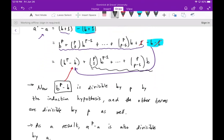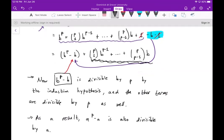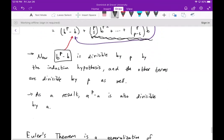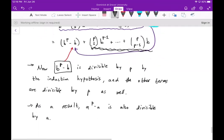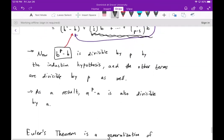Now, of course, all these other terms are binomial coefficients that start at P choose one, which is P, and end at P choose P minus one, which is also P. So all the other terms are divisible by P as well. So now we've shown that A to the P minus A is also divisible by A.